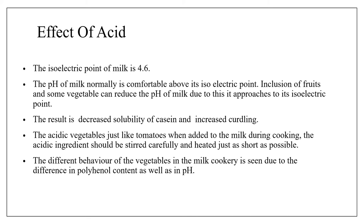The pH of milk normally is comfortably above its isoelectric point. Inclusion of fruits and some vegetables can reduce the pH of milk, causing it to approach its isoelectric point. As a result, the solubility of casein decreases and curdling of the milk increases, because the acidic environment causes the milk to curdle. So if we do cooking with different vegetables and milk, we can see different behaviors in the kitchen due to the content of polyphenols and the changing pH.